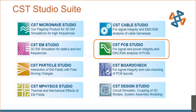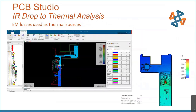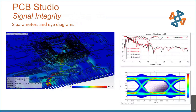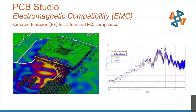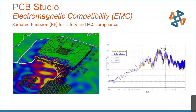CST PCB Studio can import complex board designs from Cadence, Mentor, and general file formats including ODB++. After the user establishes nets, simulations include IR drop/power analysis, time domain or frequency domain, and thermal. The voltage IR drop can be exported as a heat source to the co-simulation thermal solver. Signal integrity results include S-parameters, transient results, and eye diagrams. PCBs also have FCC requirements for radiation emission, which CST provides along with a detailed study of 3D fields.